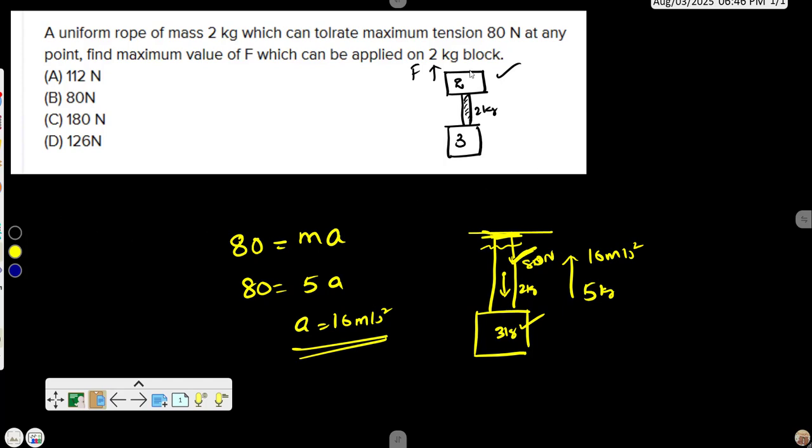Now what he says, I should apply force on this 2 kg block. So the force is now holding how many blocks? The force will be pulling all these three together: the 2 kg block, 2 kg rope, and 3 kg. So force equals the entire masses, 2 kg block plus 2 kg rope plus 3 kg block, into 16 meter per second squared. This much force you can apply.